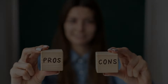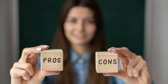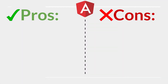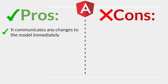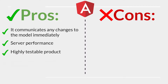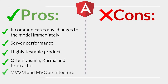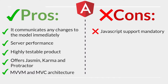Let's take a look at Angular's pros and cons. Pros: it communicates any changes to the model immediately, great server performance using a caching system, highly testable — offers Jasmine, Karma, and Protractor — and supports MVVM and MVC architecture. Cons: JavaScript support is mandatory, and experience with MVC is required; if you are not familiar with MVC architecture, it's not a good choice.